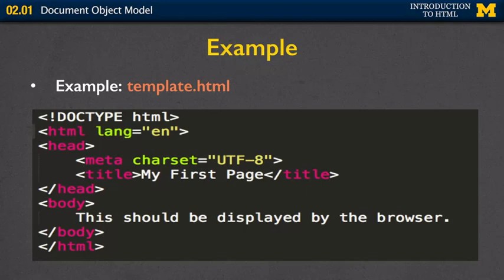So let's look at an example. Right here, I have a file called template.html, and I'm displaying the code here on the screen for you. Can you find the three parts of a well-formed document? The first thing you want to look for is the doc type. We've got that right here, letting them know that this is an HTML5 document.